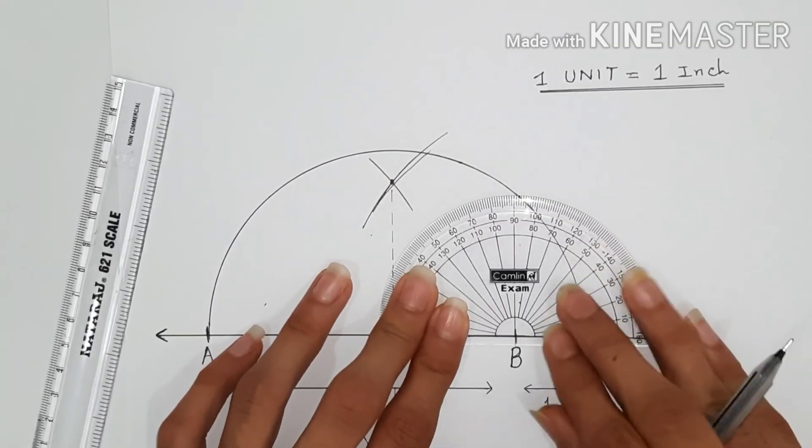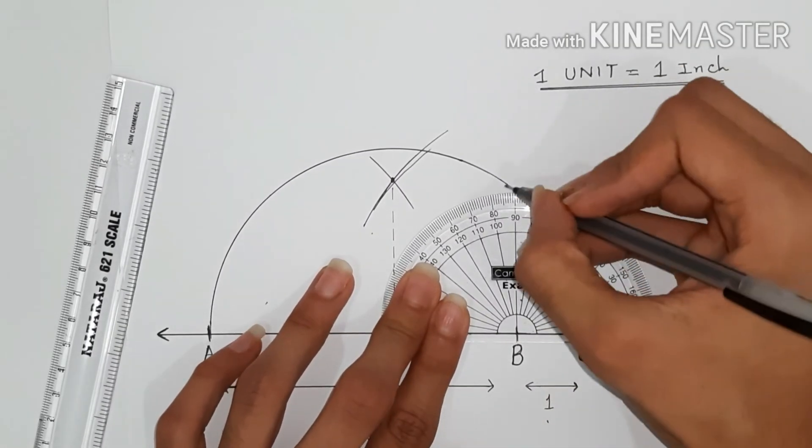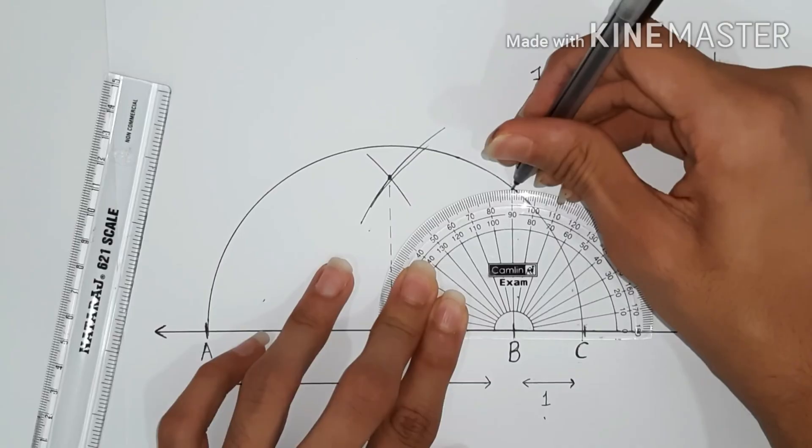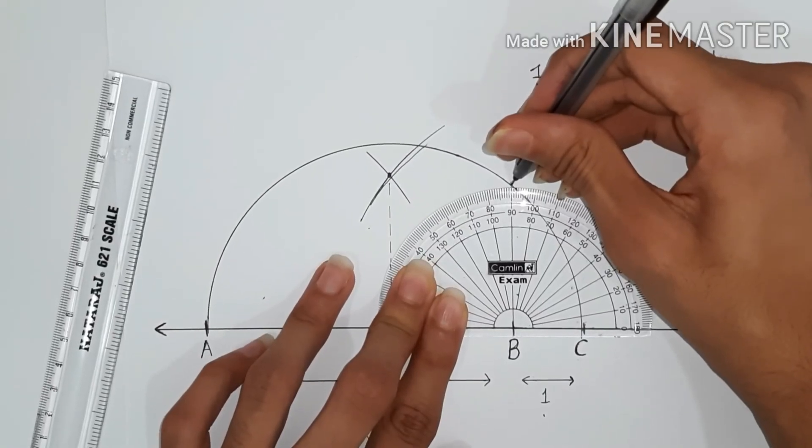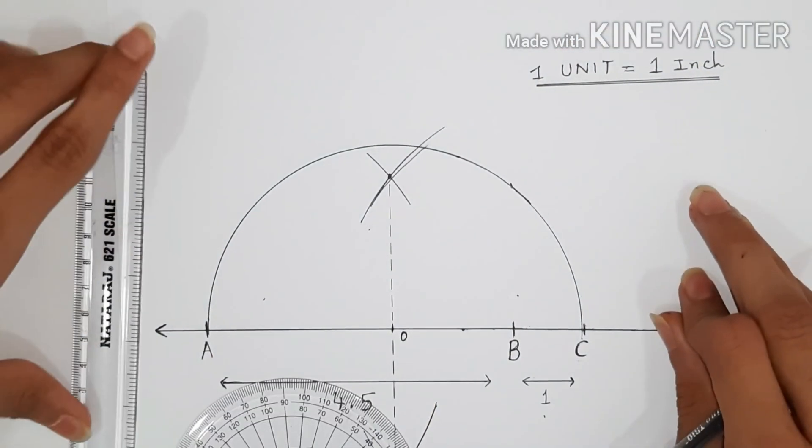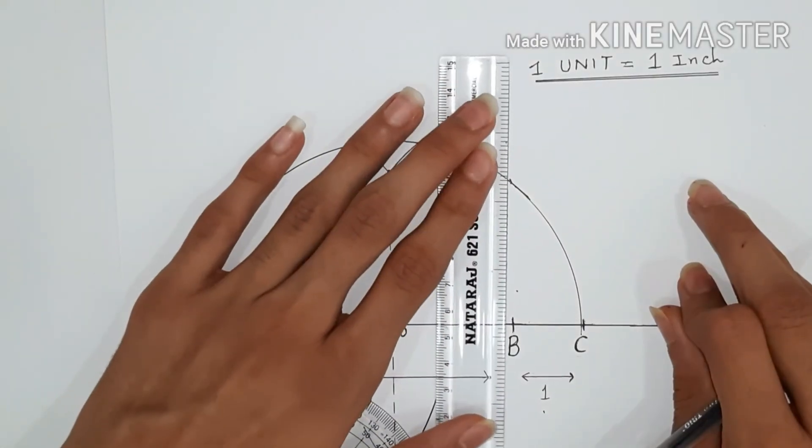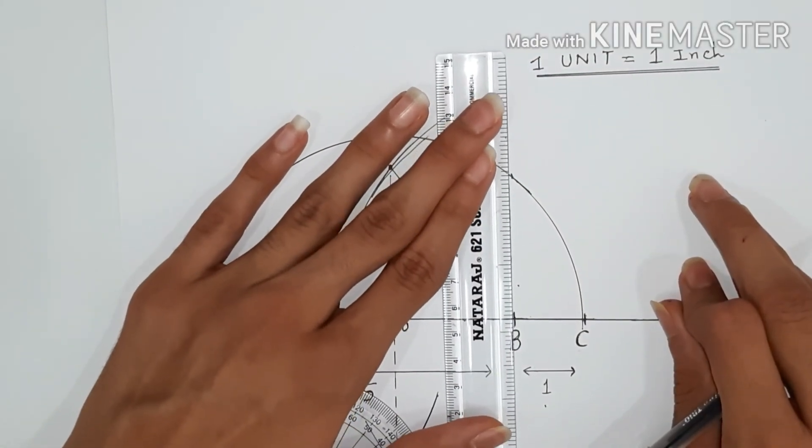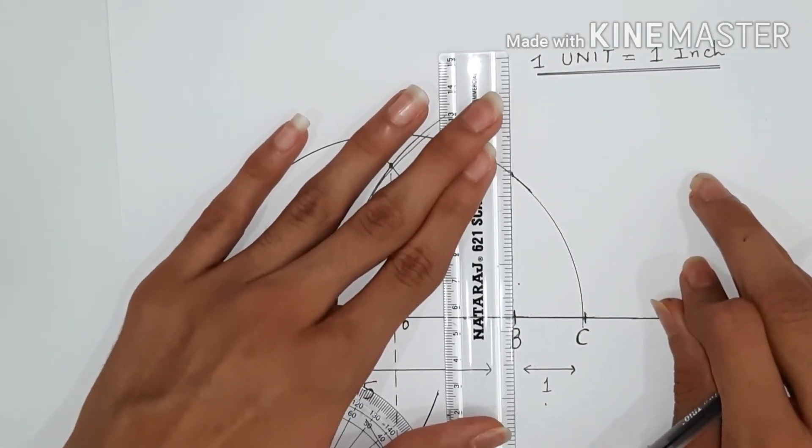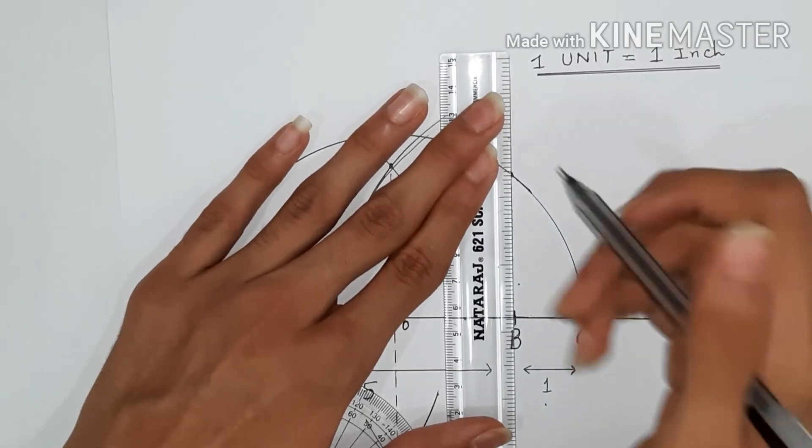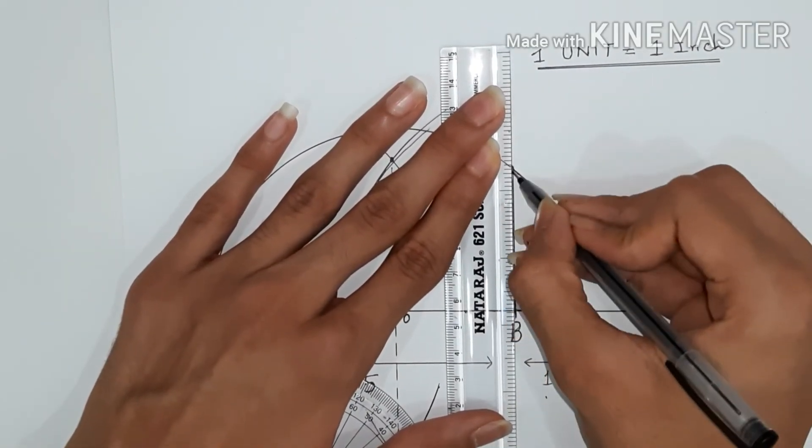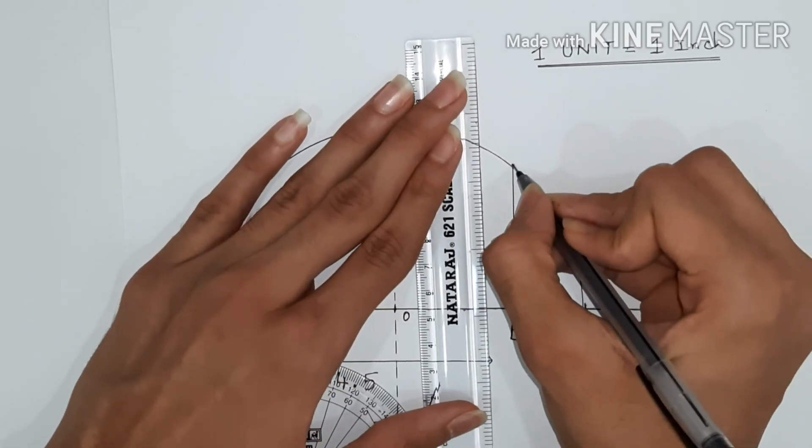Now with the help of a protractor and B as the center, we draw a point perpendicular to line AC. We'll join the point with point B to get a perpendicular line.